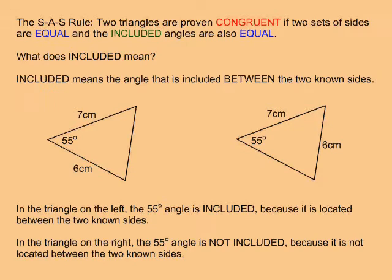The SAS rule states that two triangles are proven congruent if two sets of sides are equal and the included angles are also equal. But what does included mean? Included means the angle is included between the two known sides.